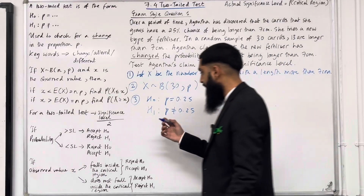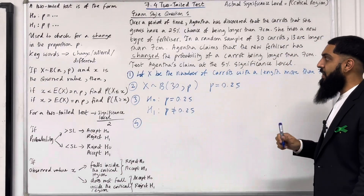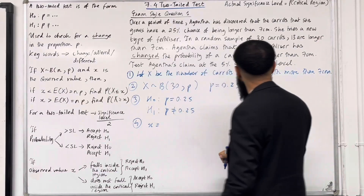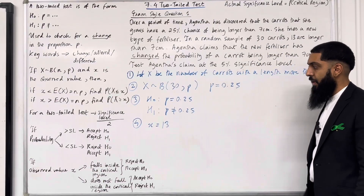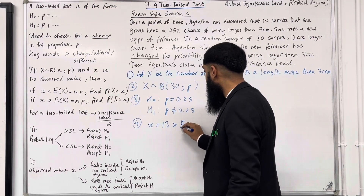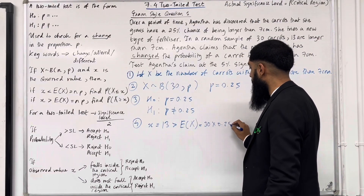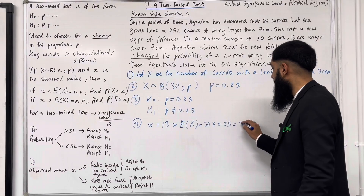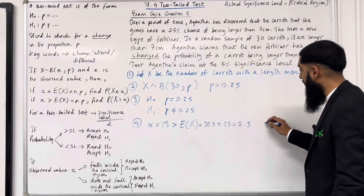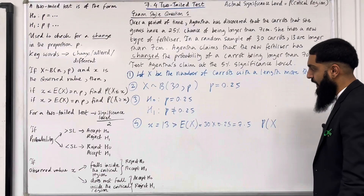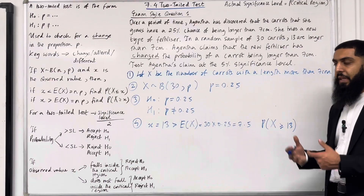Step 4: in the random sample of 30 carrots, 13 are longer than 7cm, so lowercase x = 13. This is the observed number of carrots longer than 7cm. Since 13 is greater than the expected value NP = 30 × 0.25 = 7.5, we are going to calculate P(X ≥ 13).